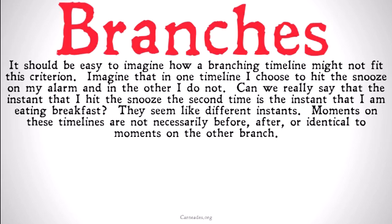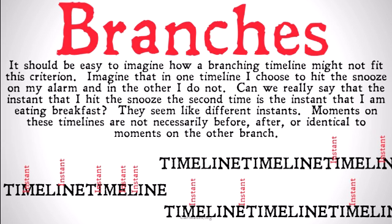Imagine that in one timeline I choose to hit the snooze on my alarm and go back to sleep, and in the other I get up and start eating breakfast. Can we really say — even if the same amount of time has passed since the moment time split — that the instant of hitting the snooze a second time in the first timeline is the same instant as the one where I'm eating breakfast? It doesn't really make sense to relate instants on those separate timelines. They seem to be different instants, even if they're happening after the same amount of time from the point of branching. It doesn't really make sense to say those instants are before, after, or identical to any instant on that other timeline.